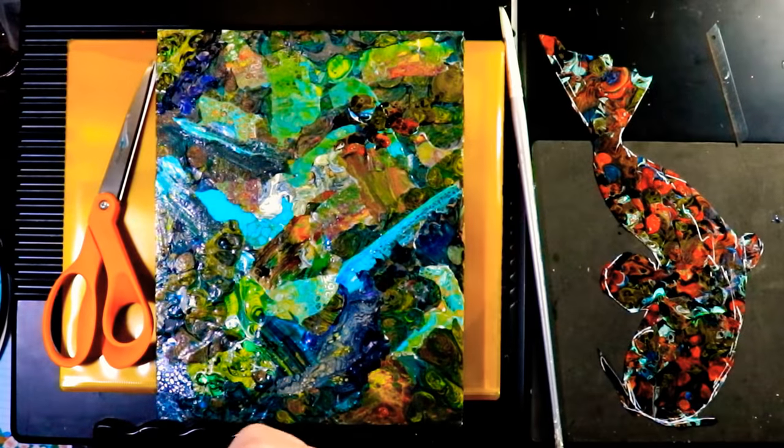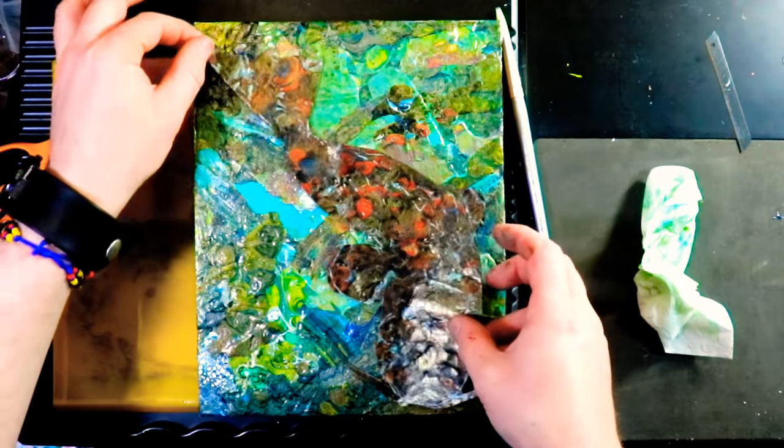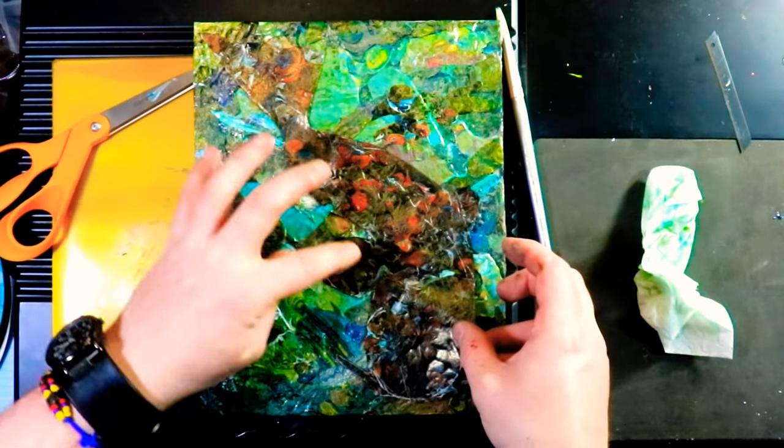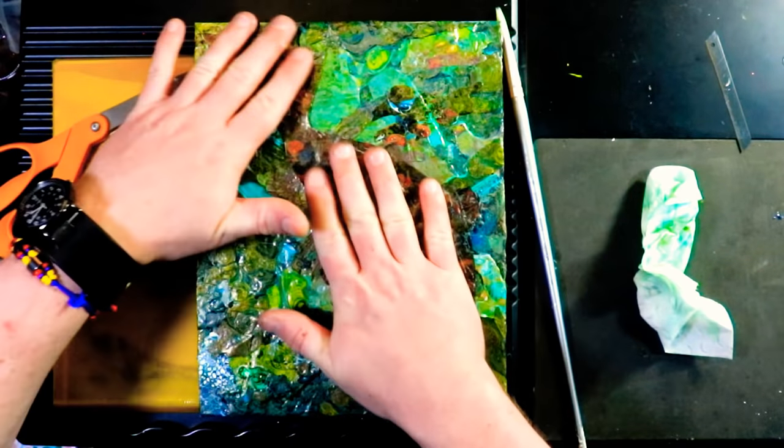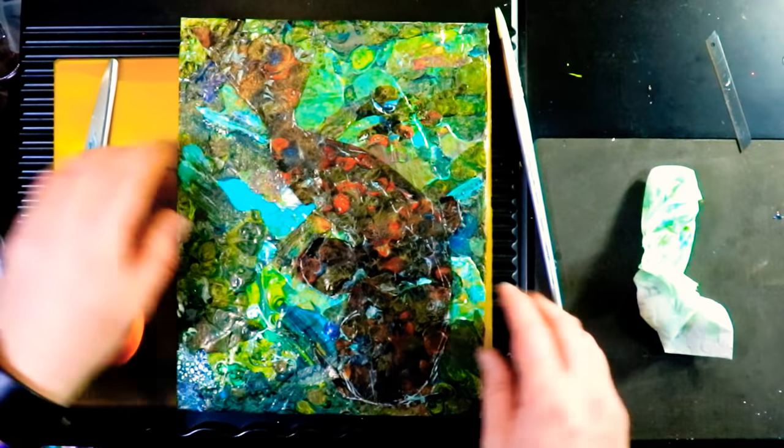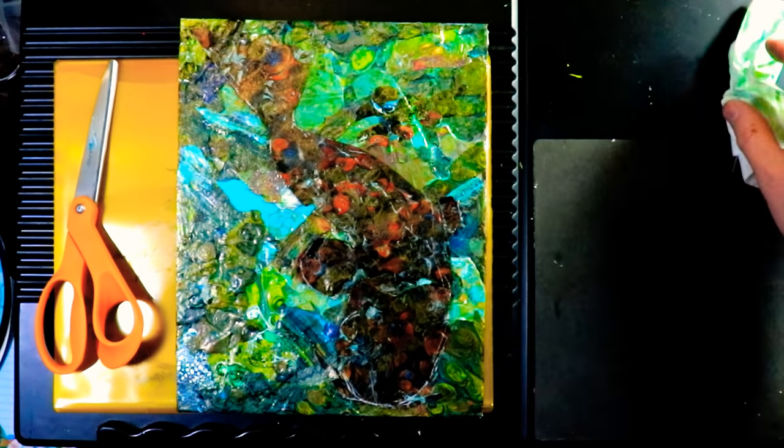Now that we've got that generally cut out, we're just going to find where we want to place it. I'm going to put the tail in this corner and a whisker in that corner. We're going to pull out our Mod Podge one more time.